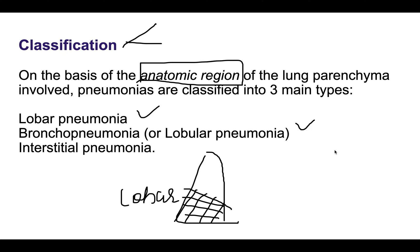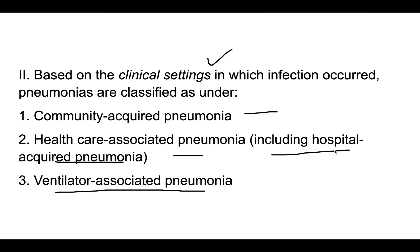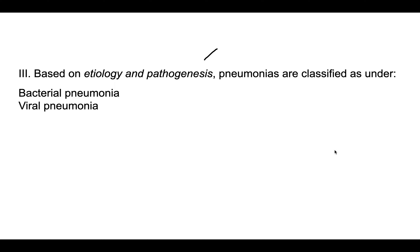In bronchopneumonia, there is a multifocal patchy involvement. Another classification is based on the clinical setting in which pneumonia has developed: community acquired, healthcare associated including hospital acquired pneumonia, and ventilator associated pneumonia. Classification can also be based on etiology: it can be bacterial, viral, or fungal.